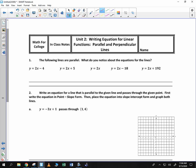As we get in the notes, it says the following lines are parallel. What do you notice about the equations for the lines? So all these equations have something in common. And if you said that the slope is equal to 2, or the slope is the same, you are correct. Slope is the same for parallel lines.